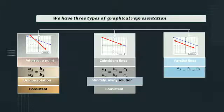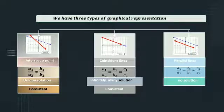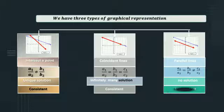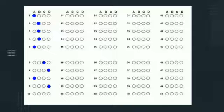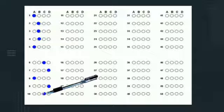Here the lines are parallel. a1 by a2 is equal to b1 by b2 is not equal to c1 by c2. Here, no solution. The system is inconsistent. So the option is C.